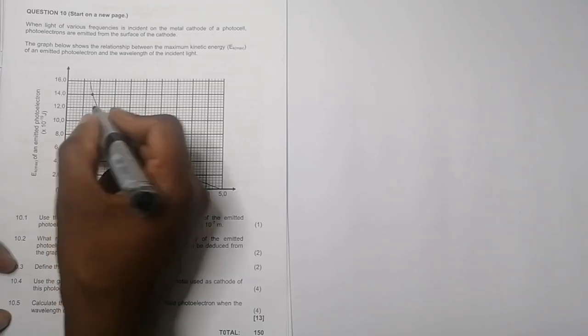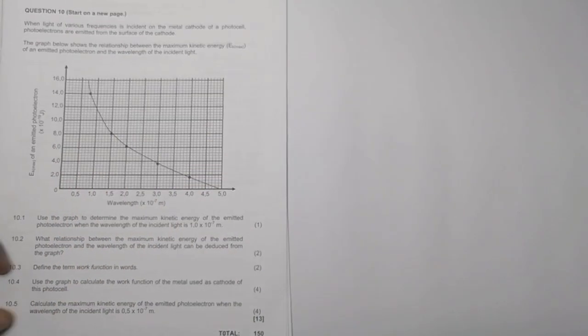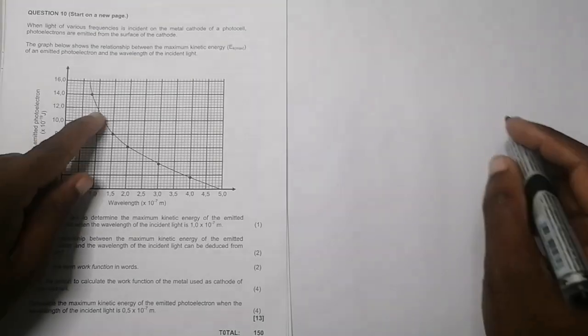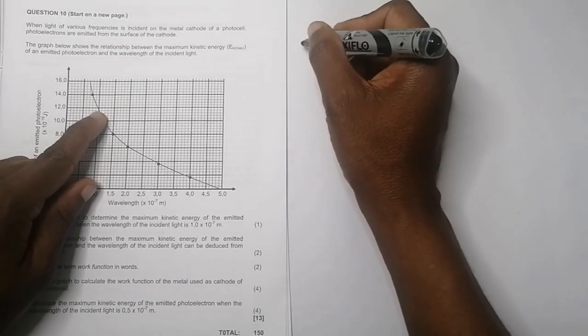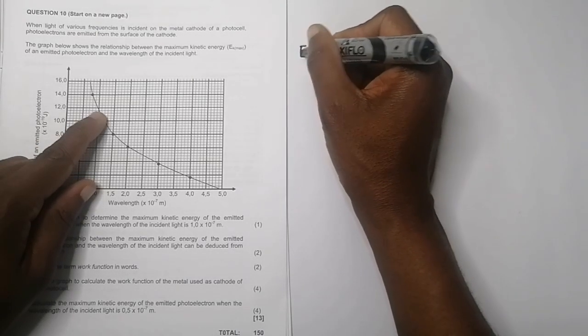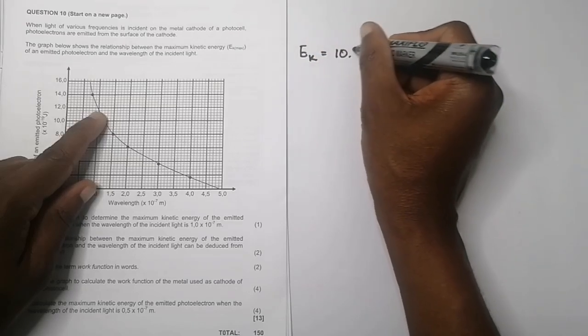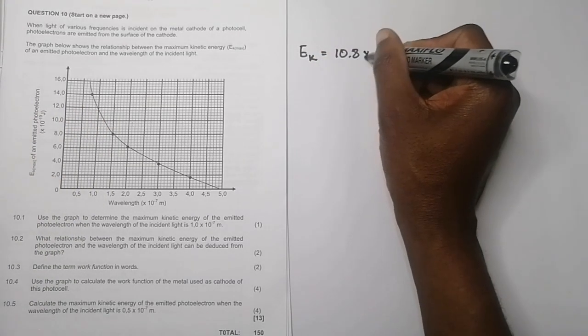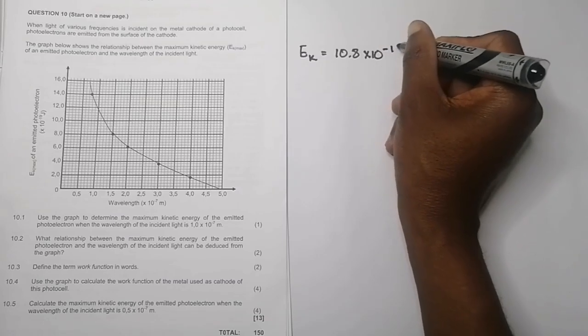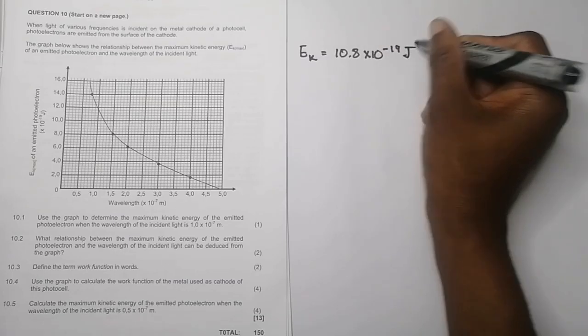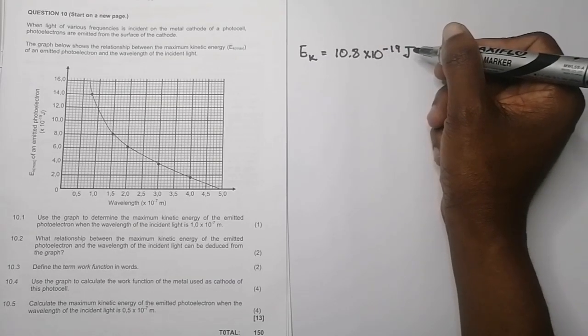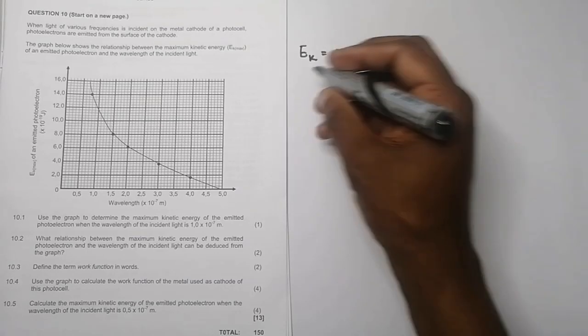10.8. So I think if you ask me, when I look at that value, it means that the kinetic energy should be equal to 10.8. Remember, this is times 10 to the power minus 19 joules. So that's the kinetic energy that I get there.